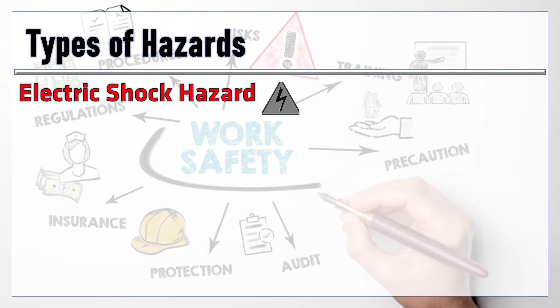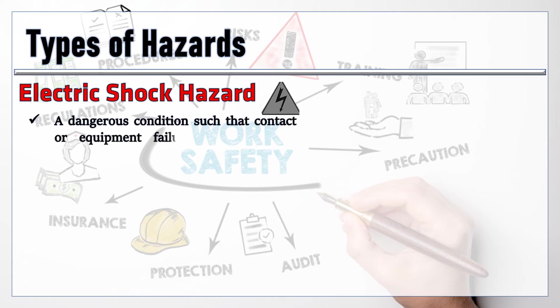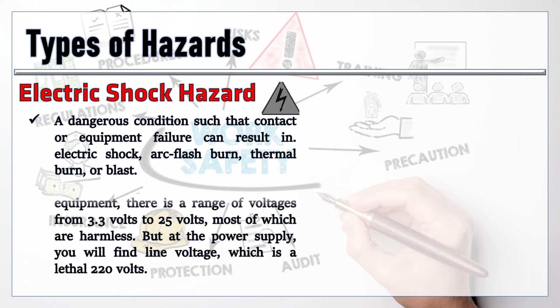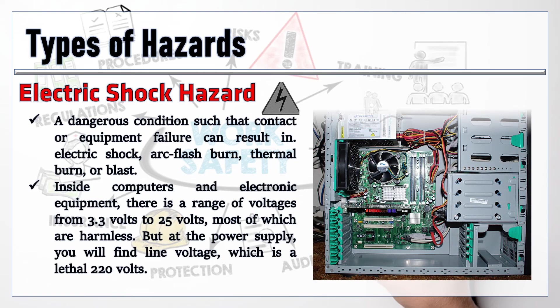The last type is the electric shock hazard — a dangerous condition such that contact or equipment failure can result in electric shock, arc flash burn, thermal burn, or blast. Inside computers and electronic equipment, there is a range of voltages from 3.3 volts to 25 volts, most of which are harmless. But at the power supply, you will find line voltage, which is a lethal 220 volts.